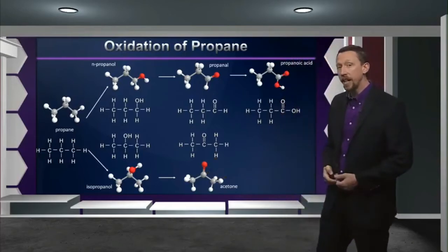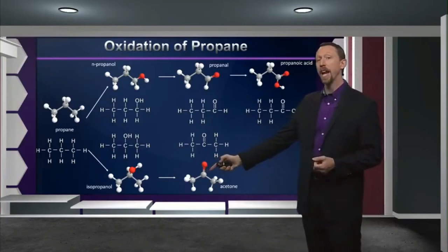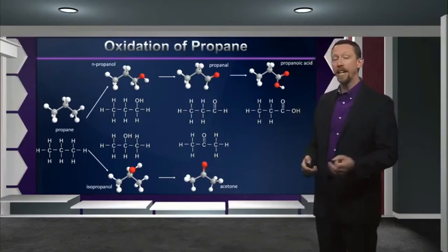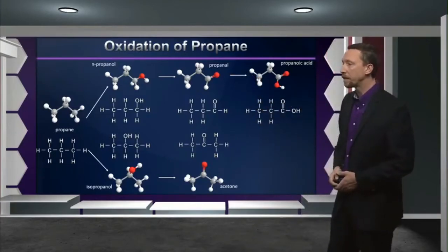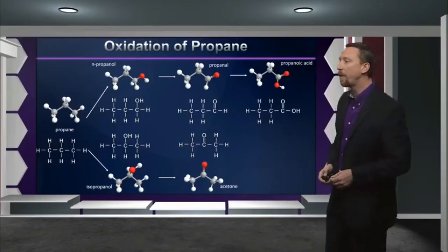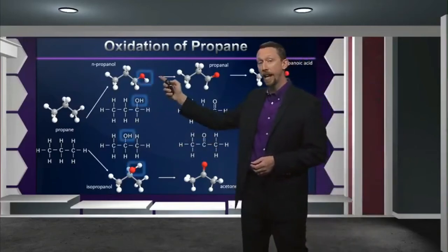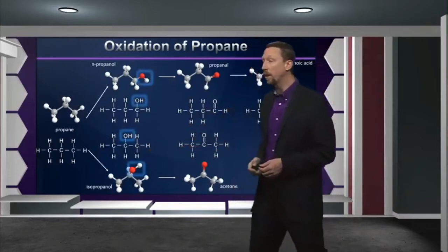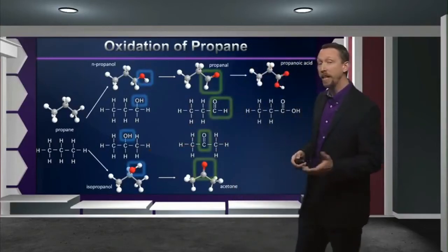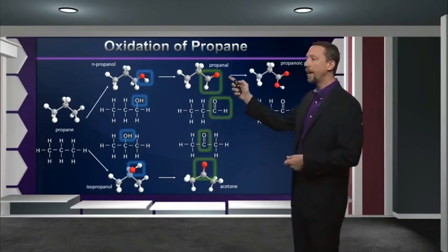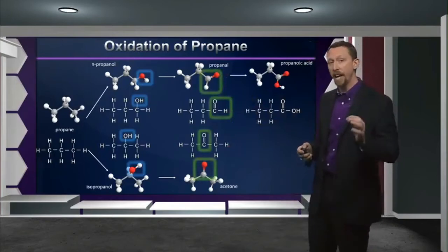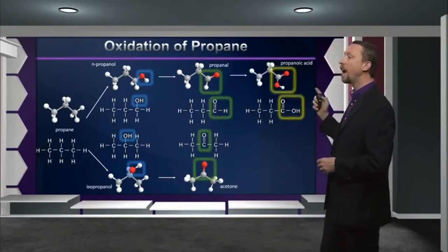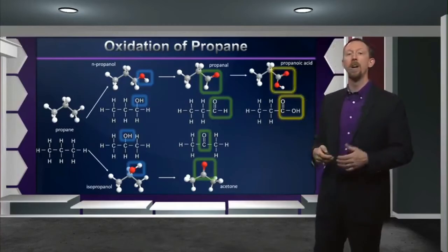So the end of the oxidative chain when I'm working with the central carbon is actually acetone, whereas the end of the oxidative chain when working at the end of the molecule would be a carboxylic acid. So again here, when I oxidize propane, I have to consider where do I put the hydroxyl to get n-propanol or isopropanol? And at that point, where do I put my carbonyl, my double bonded oxygen? Do I get propanal, an aldehyde, or do I get acetone, a ketone? And finally, if I'm dealing with a terminal carbon, I can get one more oxidative step to form what we call propanoic acid, a carboxylic acid molecule.